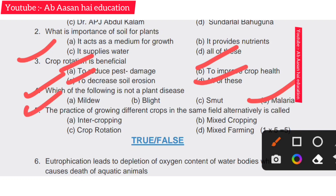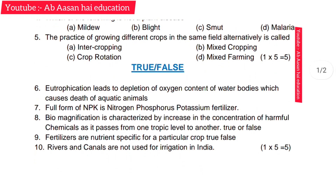Fifth question: the practice of growing different crops in the same field alternatively is called — inter cropping, mixed cropping, or crop rotation? Crop rotation is the right answer. Mixed cropping might seem similar but crop rotation is the correct answer.